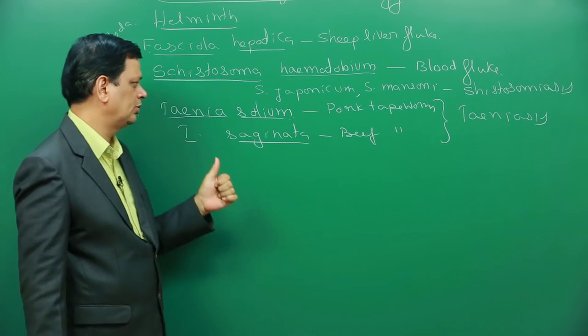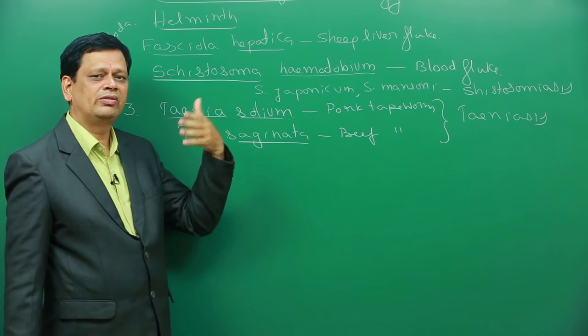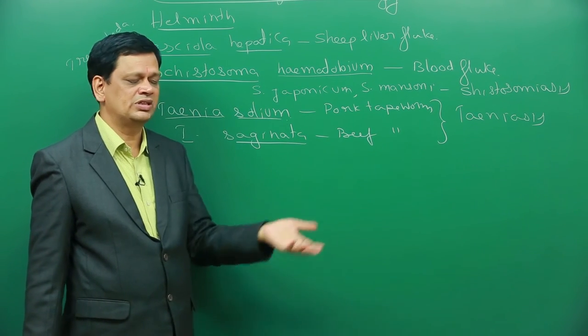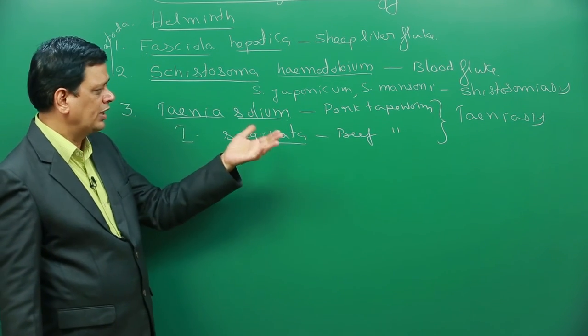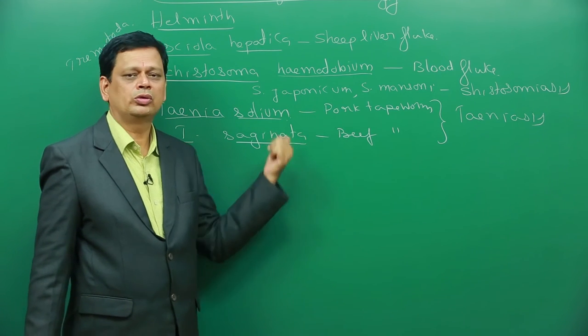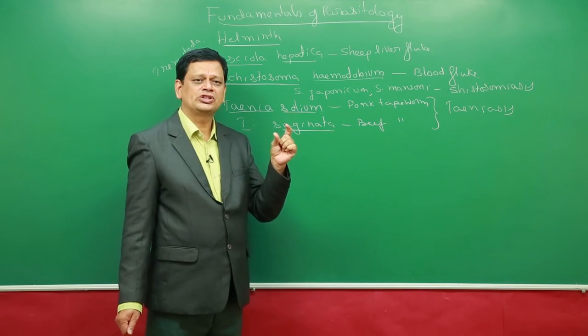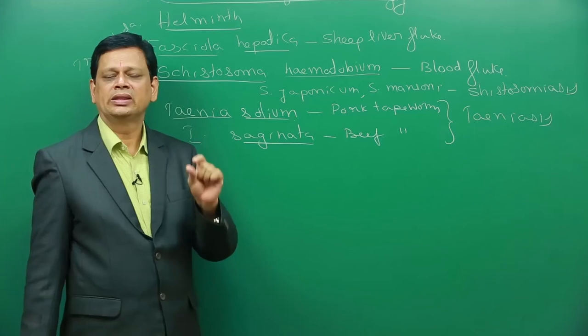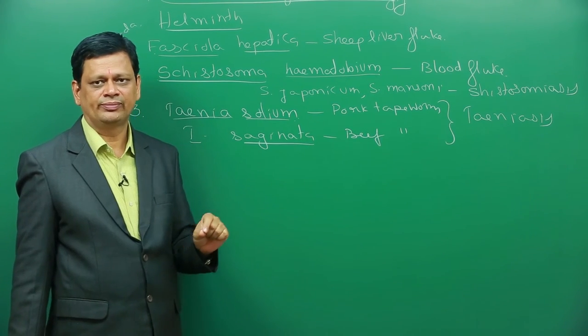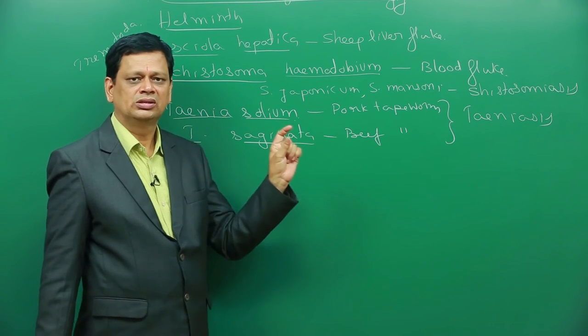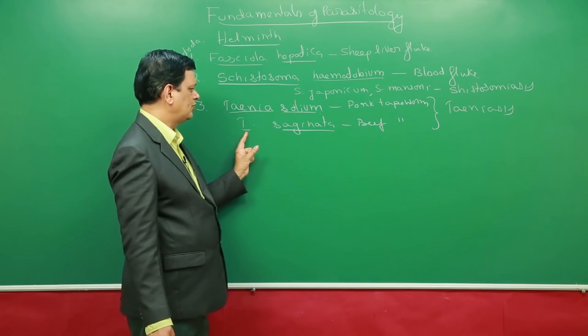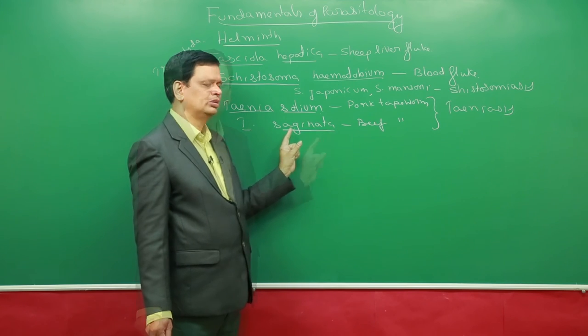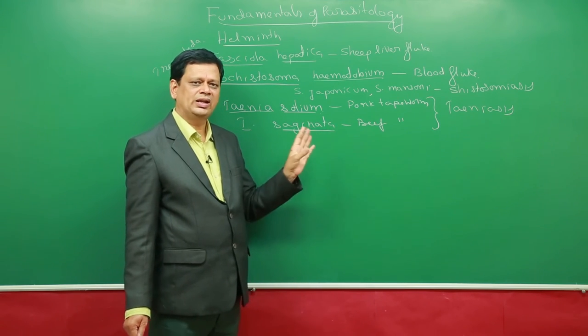And then, Taenia solium is a pork tapeworm and it will have some larval forms called cysticercus larvae that is spreading from pork to human being. When the flesh of pig or pork is eaten, which is not properly cooked, then it enters human beings and can cause health problems. Second one, Taenia saginata, basic structure and other details are same.